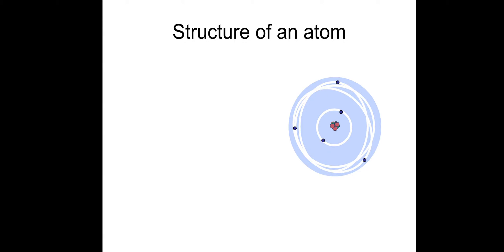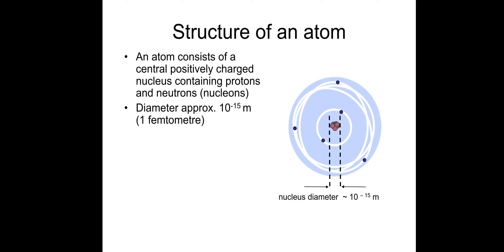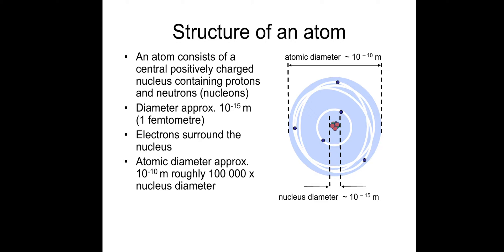Structure of an atom. This should be familiar. So an atom consists of a centrally positively charged nucleus that contains protons and neutrons. The protons and neutrons combined are called nucleons. They have a diameter of approximately 1 femtometer, which is 10 to the minus 15 meters, so very small. The electrons orbit or surround the nucleus. And the atomic diameter is approximately 10 to the minus 10 meters, or roughly 100,000 times larger than the diameter of the nucleus. Remember, at any point, if you want to take some notes, just pause, make the appropriate notes, and then continue.